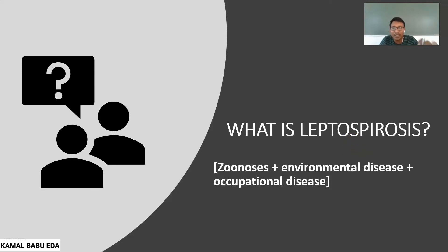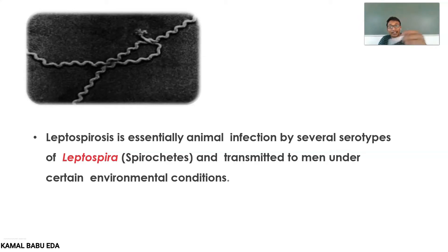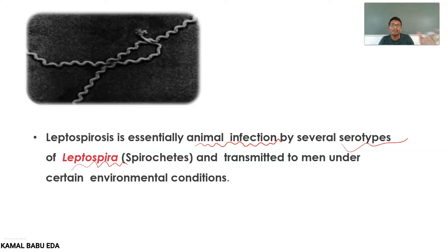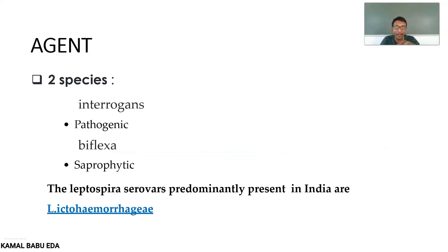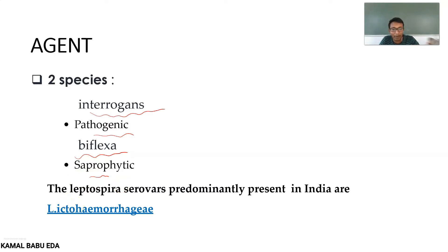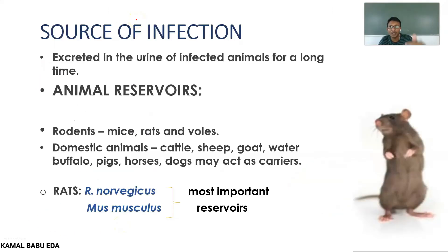Leptospirosis is a zoonosis, an environmental disease as well as an occupational disease. It mainly occurs from animal infection from different types of serovars belonging to Leptospira, which are known as spirochetes, and are mainly transmitted to human beings in various environmental conditions. Coming to the epidemiological agent factors, we have two species: first is interrogans, which is pathogenic, and second is biflexa, which is saprophytic. The predominant serovar in India is L. icterohaemorrhagiae.